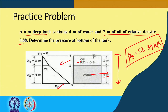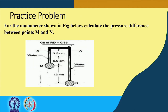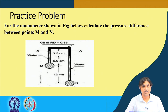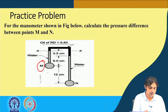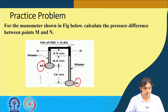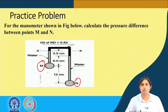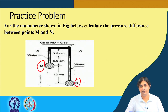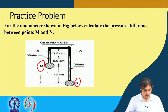Here is another problem: we have a manometer and need to calculate the pressure difference between points M and N. The approach is to start at one point where pressure is known and traverse to the other — adding pressure when going down, subtracting when going up.